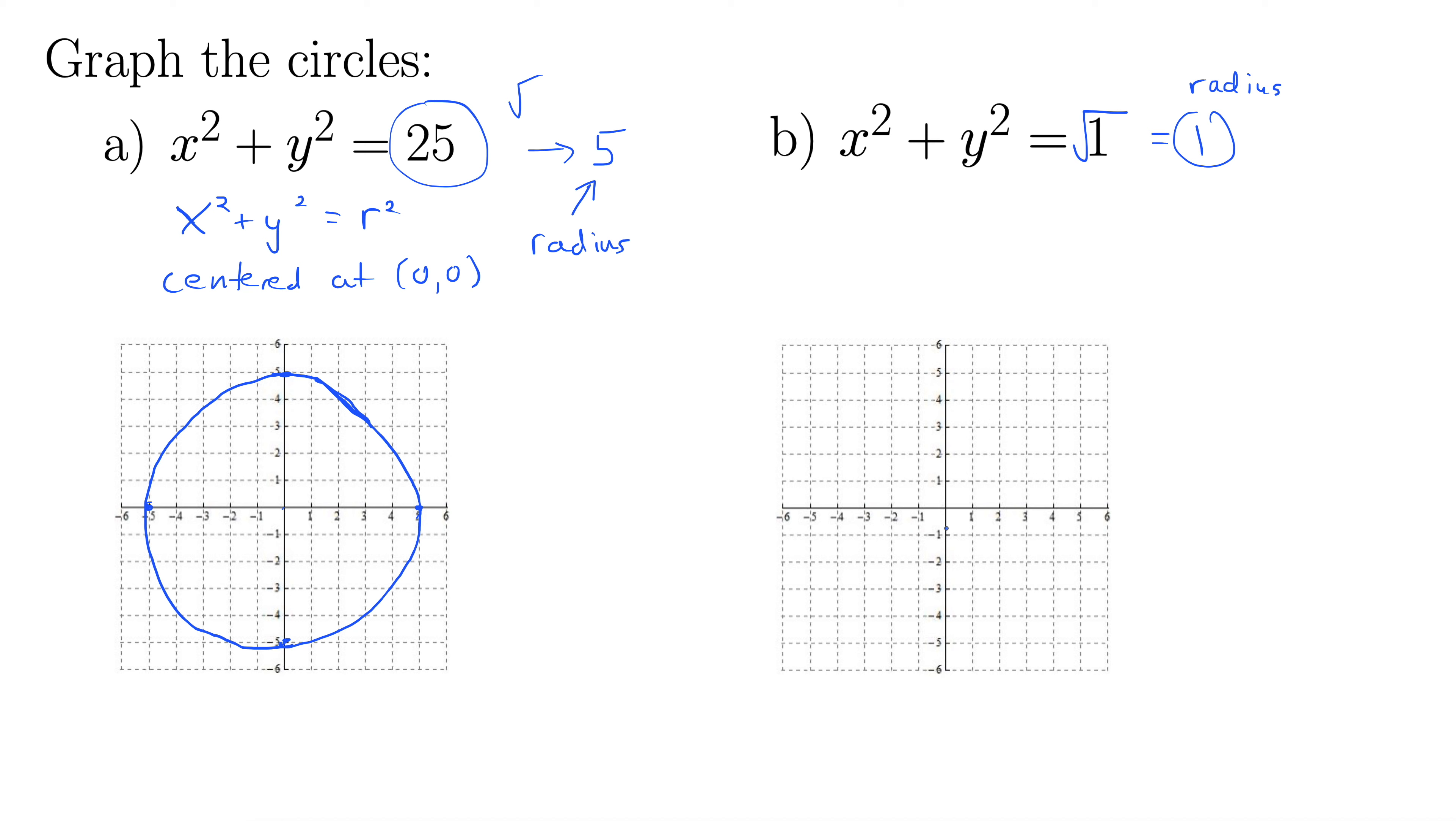The first one was pretty big. All right, so we still have our center at the origin, 0, 0. And then we just go right 1, up 1, left 1, down 1. And it makes an itty-bitty circle like so, something like that.